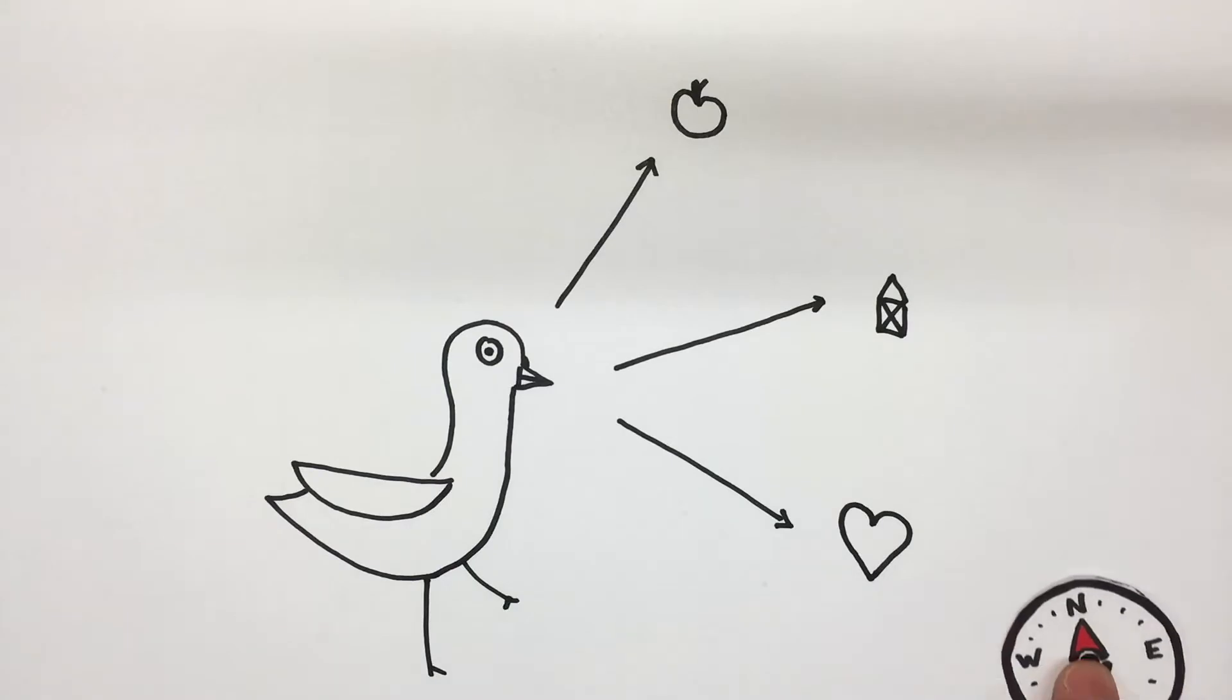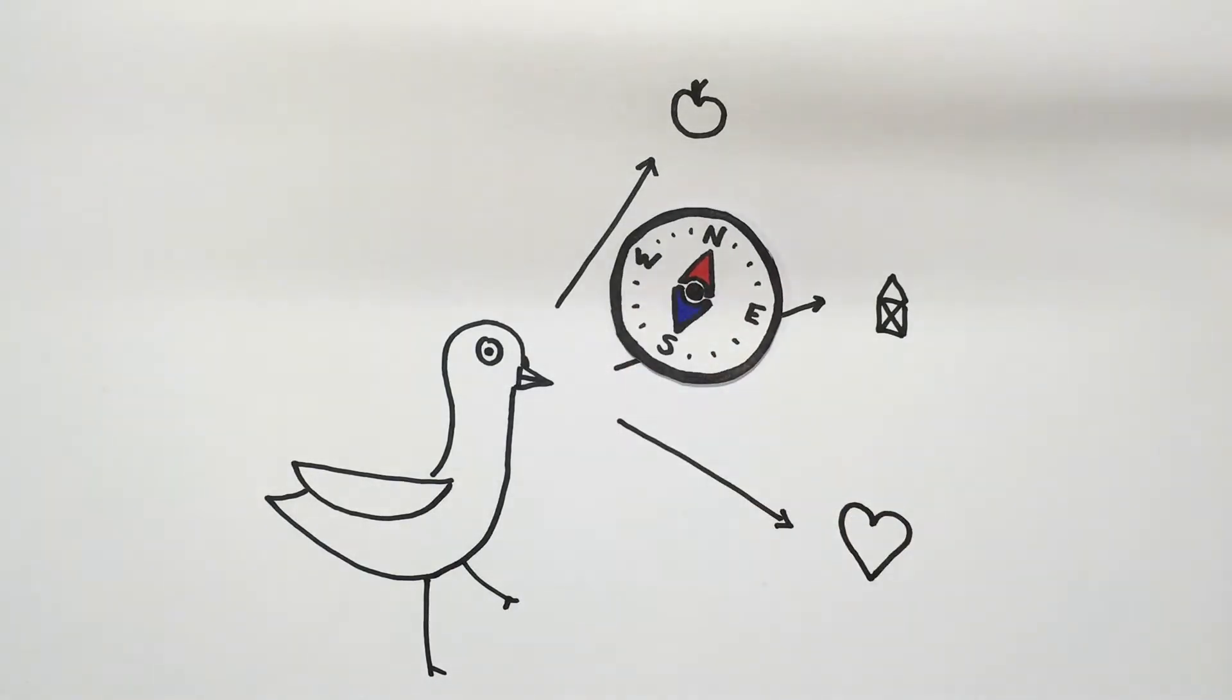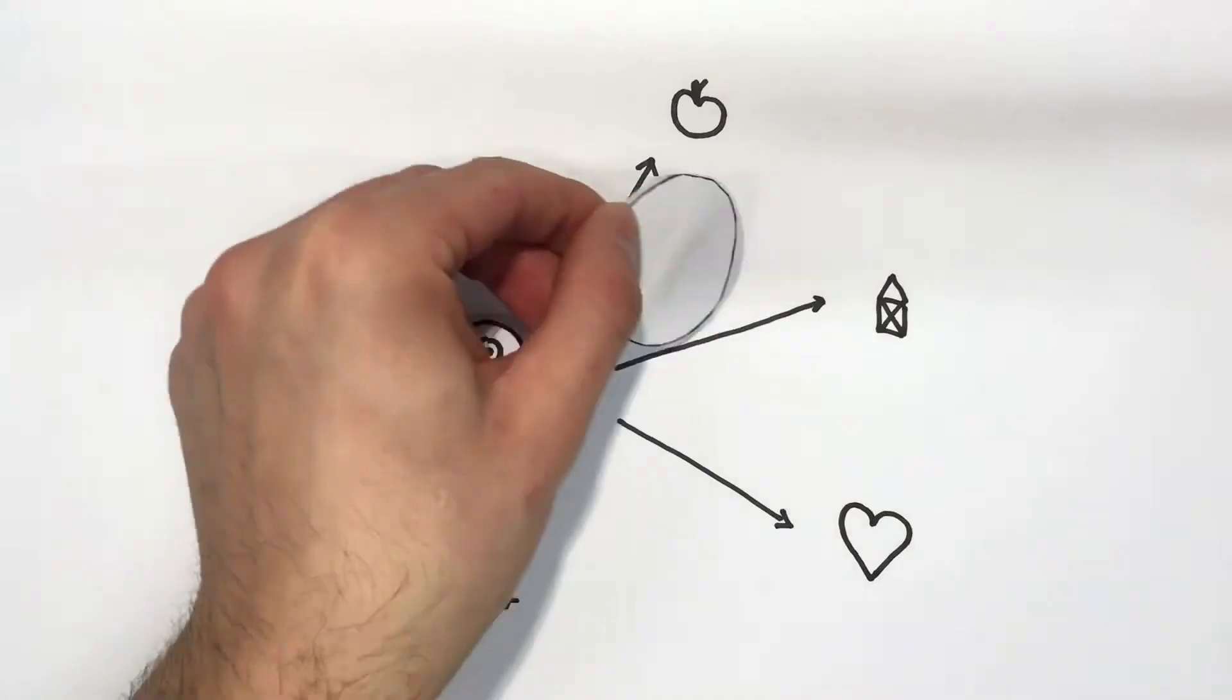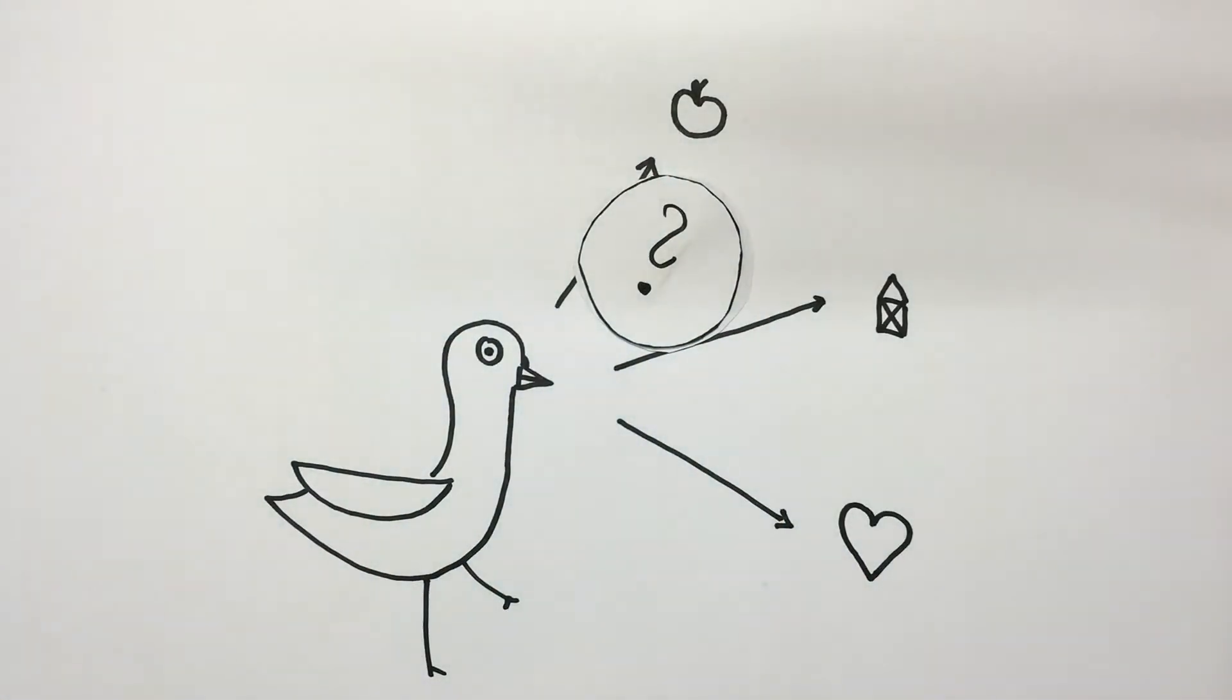To this end, many animals, such as pigeons, use information provided by the Earth's magnetic field. However, we know almost nothing about the cellular and molecular mechanism underlying this process.